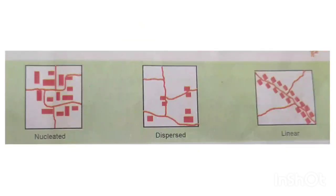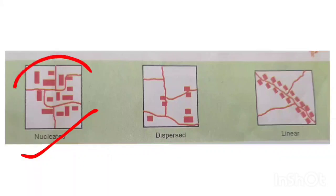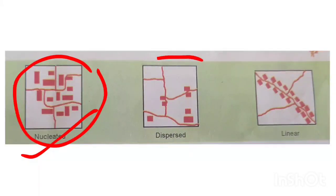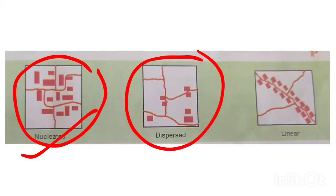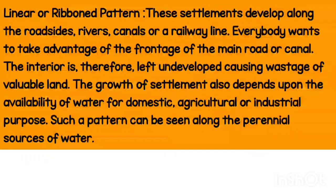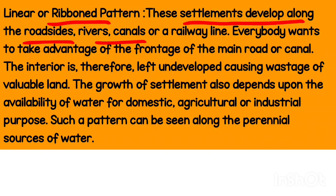This picture shows a nucleated settlement where a large number of people live together. In a dispersed settlement, houses are scattered, found along the bank of a river or roadside. The linear settlement — also called the ribbon pattern — develops along the roadside, river, canal, or rail line, wherever people want to take advantage of the frontage of the main road. This is called the linear or ribbon type of settlement.